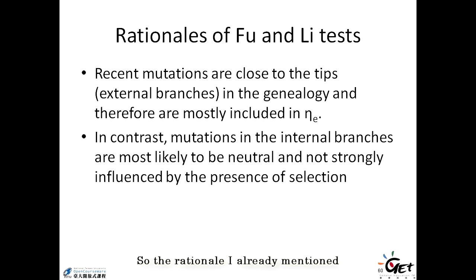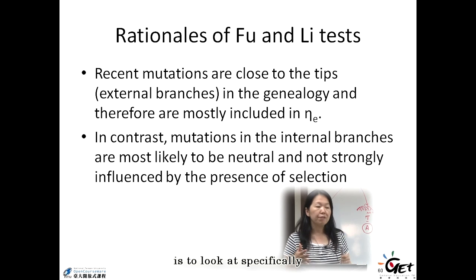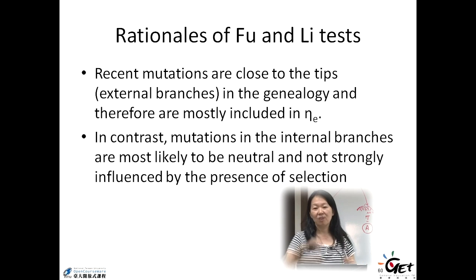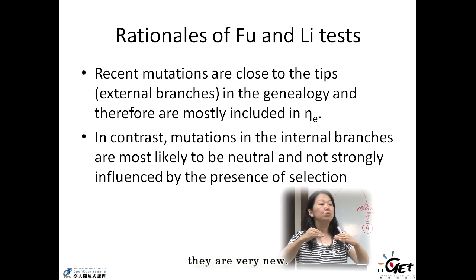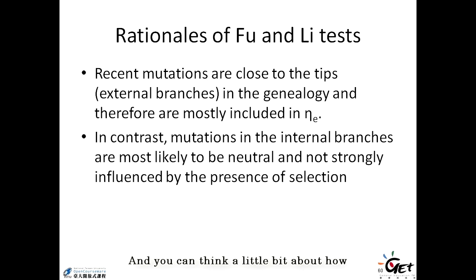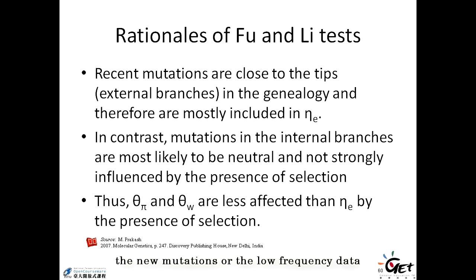So the rationale I already mentioned during my talk is to look at specifically all the external branches. So all these new mutations. So all the branches are external and all the mutations, they are very new. Then you use that to compare to the pi and theta. And you can think a little bit about how the new mutations or the low frequency data contribute to theta pi and theta w. And that was something I want you to look into by yourself.